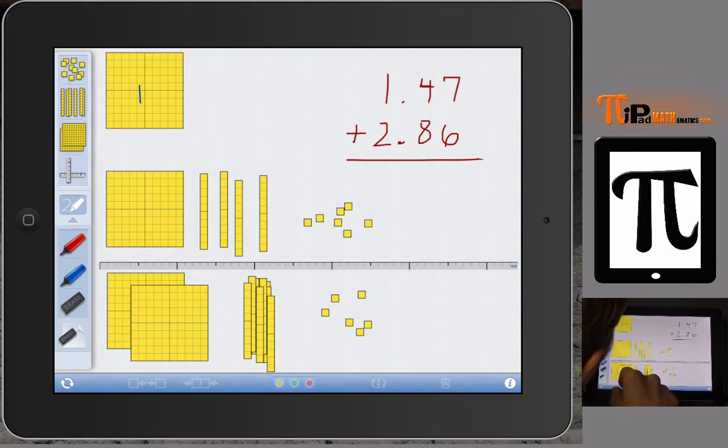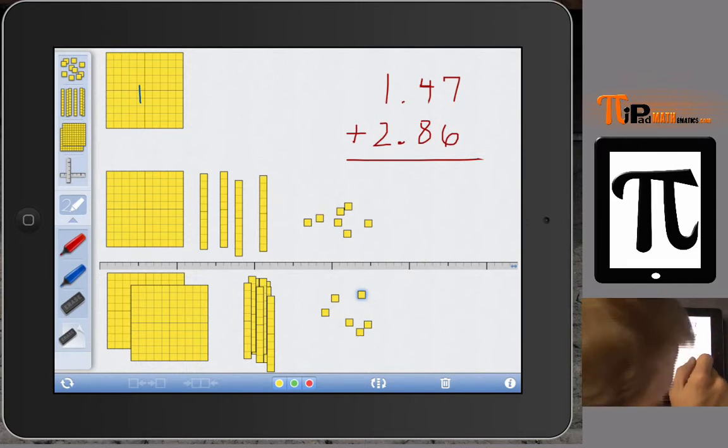So what we have here is 1 and 47 hundredths and 2 and 86 hundredths. We start in the hundredths place. I have 7 hundredths here and 6 hundredths there. So I need to add them together. We can add them and that will be 13.